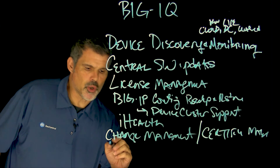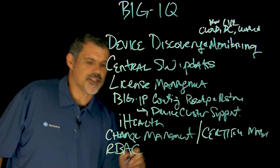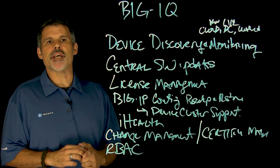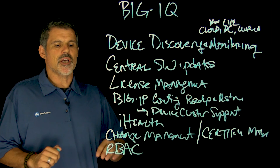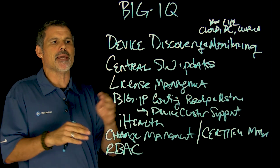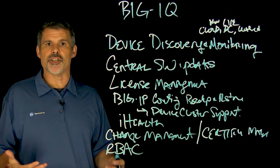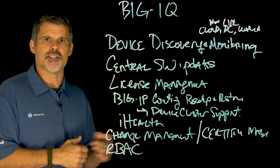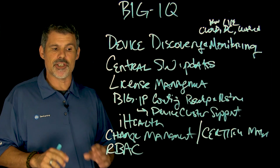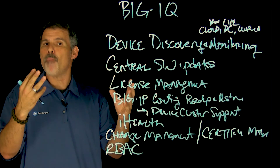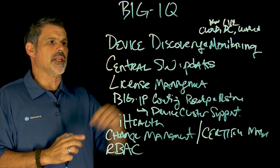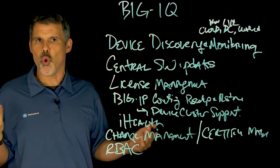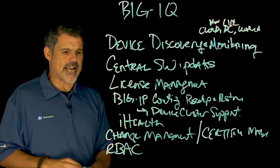You can also do role-based access control, or RBAC. Role-based access control means allowing certain people access to the Big IP, but potentially not allowing them to make any configuration changes. Maybe certain groups want to see the statistics, reporting, and analytics. So you can allow access to the analytics engine and reporting, but not necessarily allow access to things like configuration changes, creating new pools, or things like that.